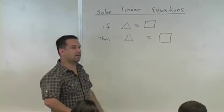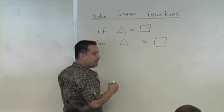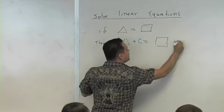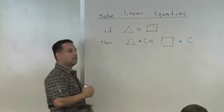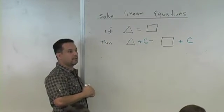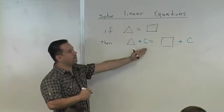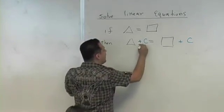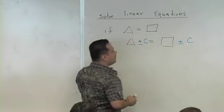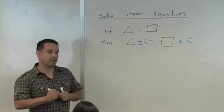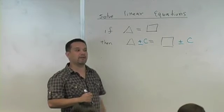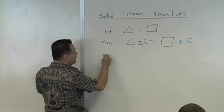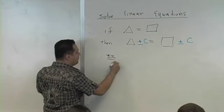Here's what you're free to do: you can add the same number to both sides of your equation and you preserve what's known as the balance, or you can subtract the same number from both sides of the equation and it preserves your balance.